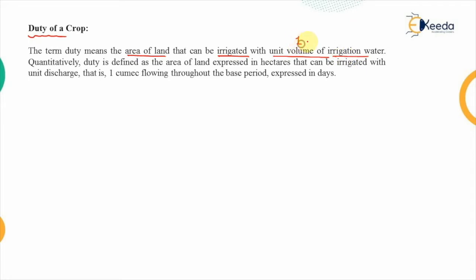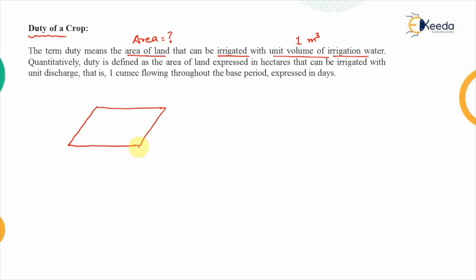That means if we supply one cubic meter of irrigation water, how much area will be irrigated because of that — that is defined as the duty of the crop. This is the land which is irrigated with the help of the supply of irrigation water, and from this side we are supplying the irrigation water. This is the volume of the water which will be supplied to the field.